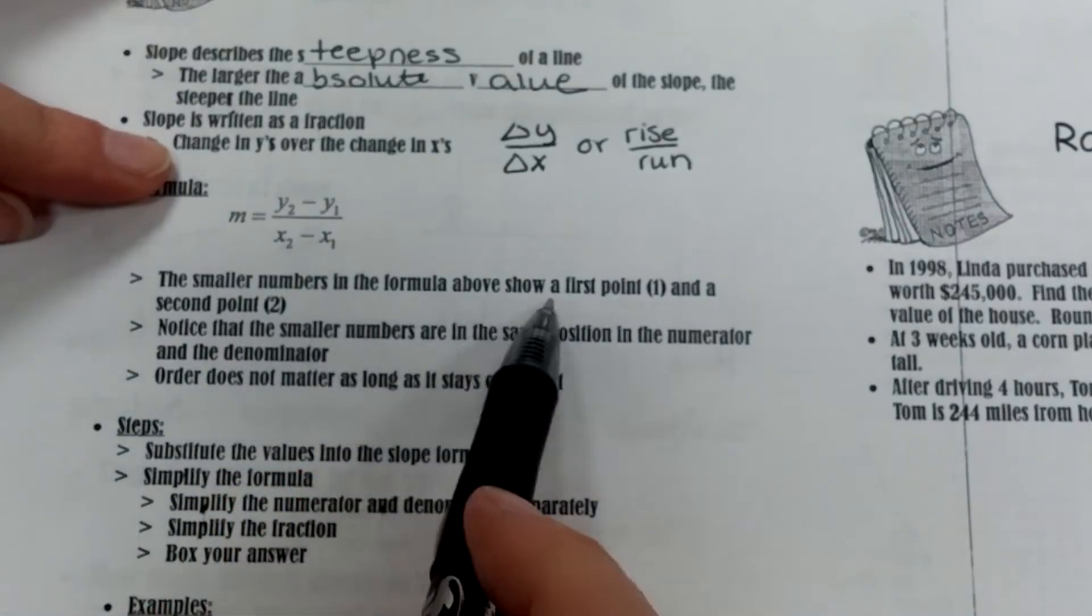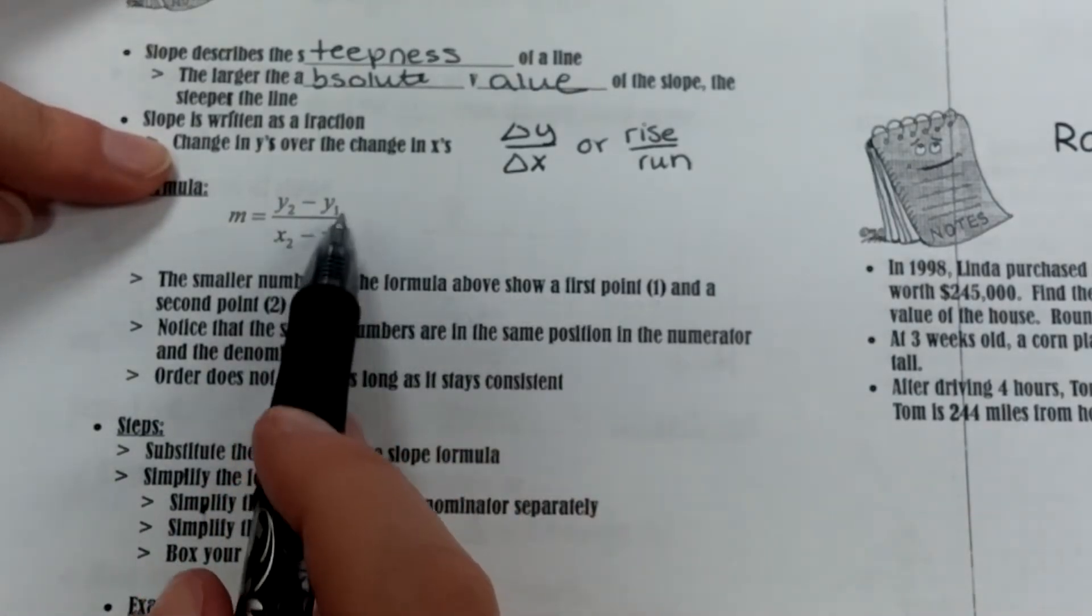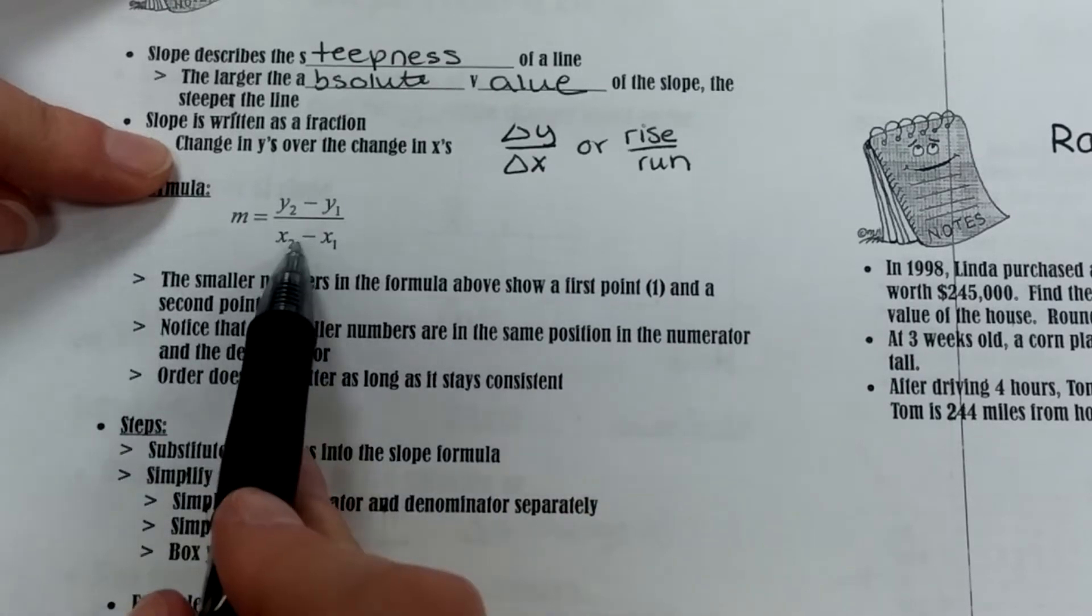The smaller numbers in the formula above show the first point—so this is the first point, x and y—and the second point, x and y.